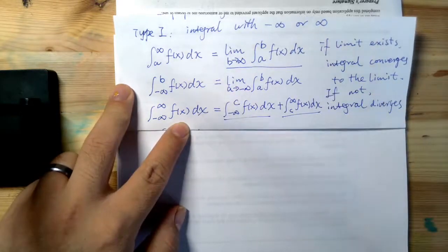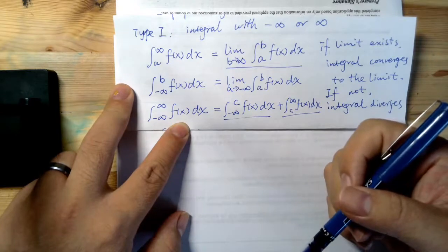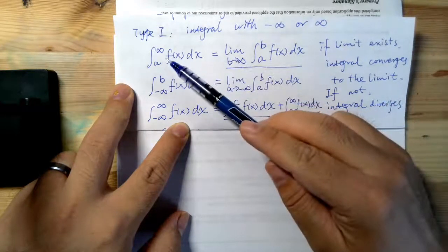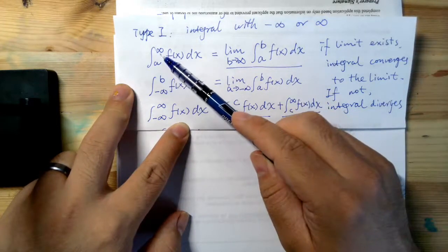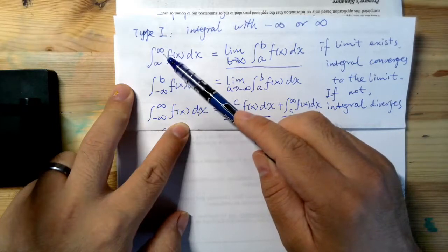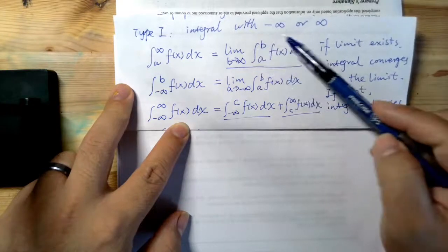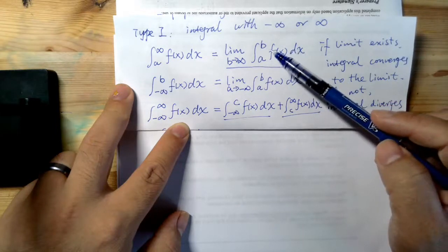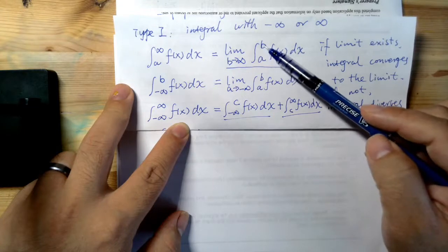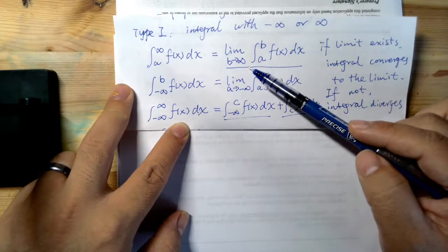And to deal with this type of integral, the idea is pretty straightforward. First of all, we're going to convert this type of integral into a limit. And how do we do that? We're going to substitute this infinity to be a variable b, and then you evaluate this definite integral. The result is going to be a solution involving b, and then you take the limit as b goes to infinity to see what happens.